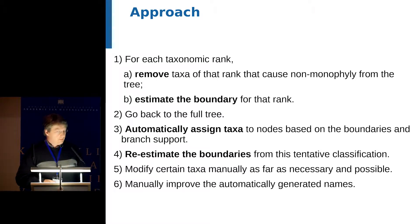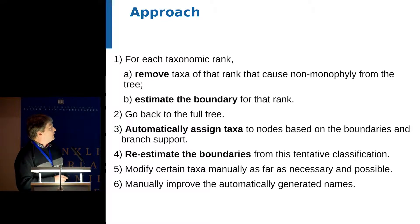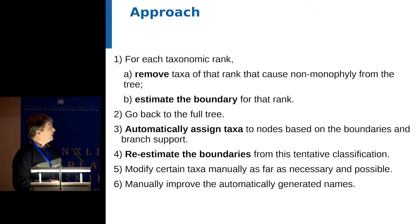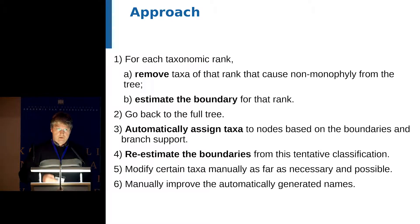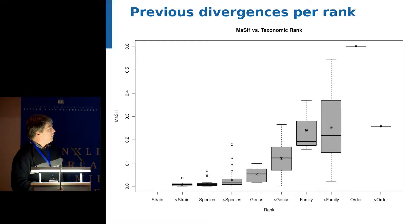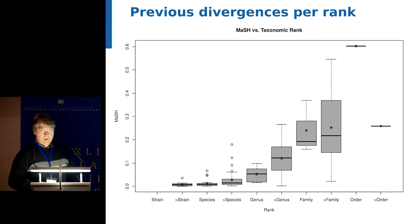For this reason, I made the following approach: I removed, for each taxonomic rank, the taxa that caused non-monophyly in the tree, then estimated the boundary only for the remaining taxa. I did this independently for each rank, then applied the boundaries back to the tree to see what happened. The picture shows estimated divergences per rank. We see some overlap between species and genera, and little overlap between families and genera, but some nodes containing several genera have very low divergence, which doesn't look ideal.